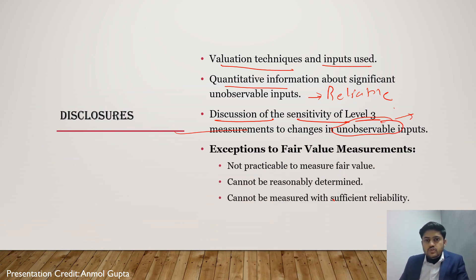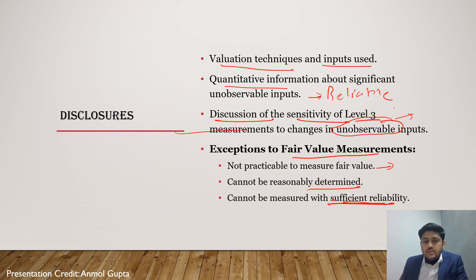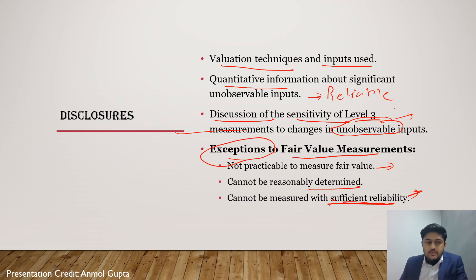There are some exceptions to fair value measurements. The first is when the measurement of fair value is not practicable. The second is when fair value cannot be reasonably determined. The third is when fair value cannot be measured with sufficient reliability — if the information available is not reliable, you may leave the fair value measurement and value the asset on some other basis.